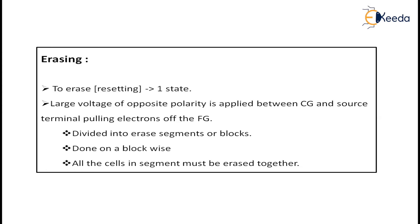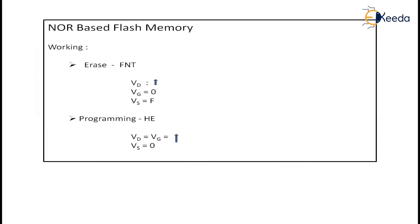In EEPROM, to write something, the entire memory cell has to be erased. Whereas in flash memory, you divide your entire cell into various segments or blocks, and any operation is done only on a particular block. All the cells present in a particular segment must be erased together — it is not that one cell will be erased individually. The complete block has to be erased.